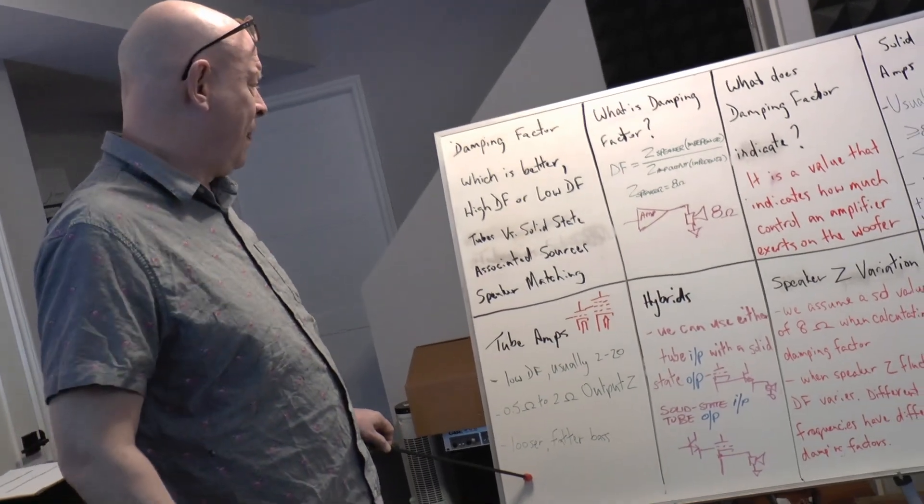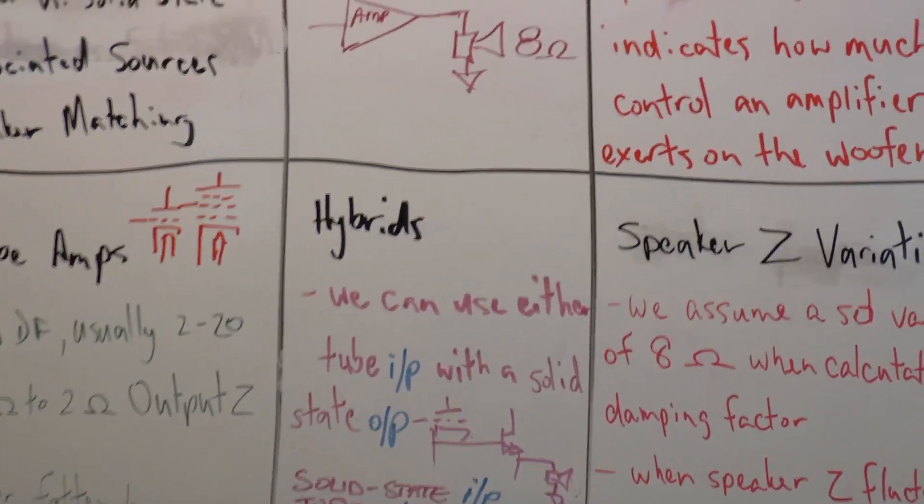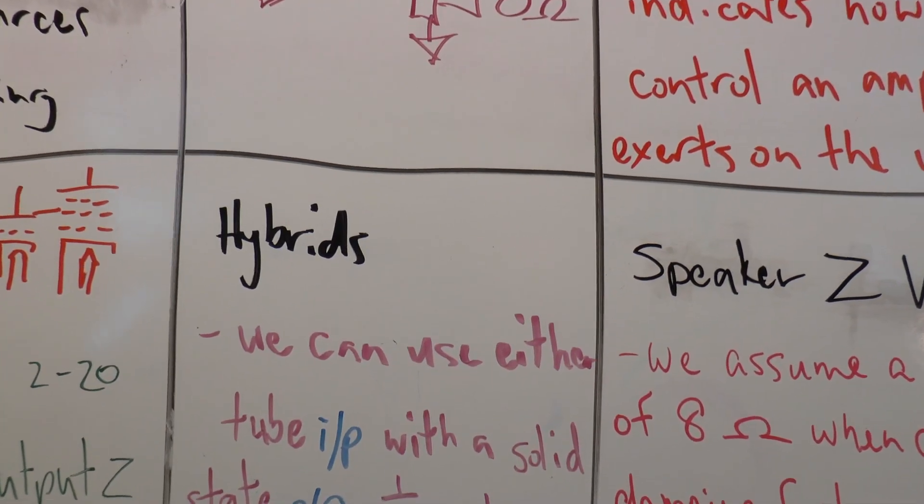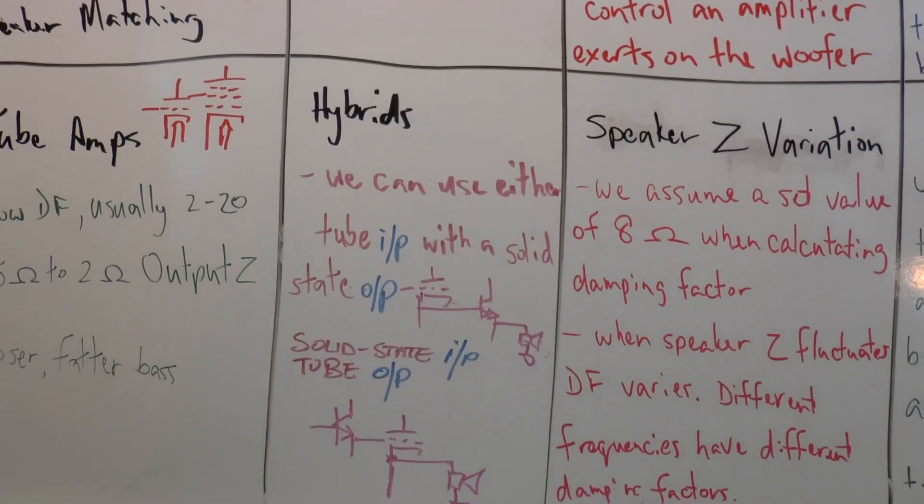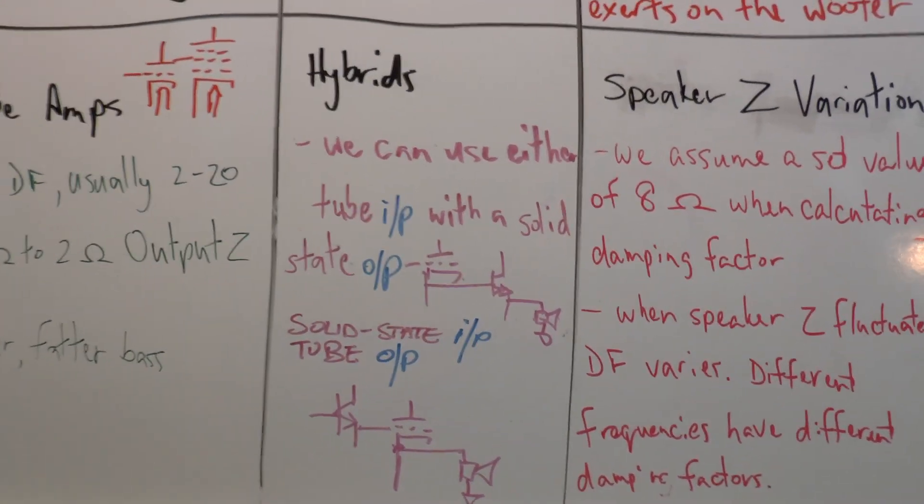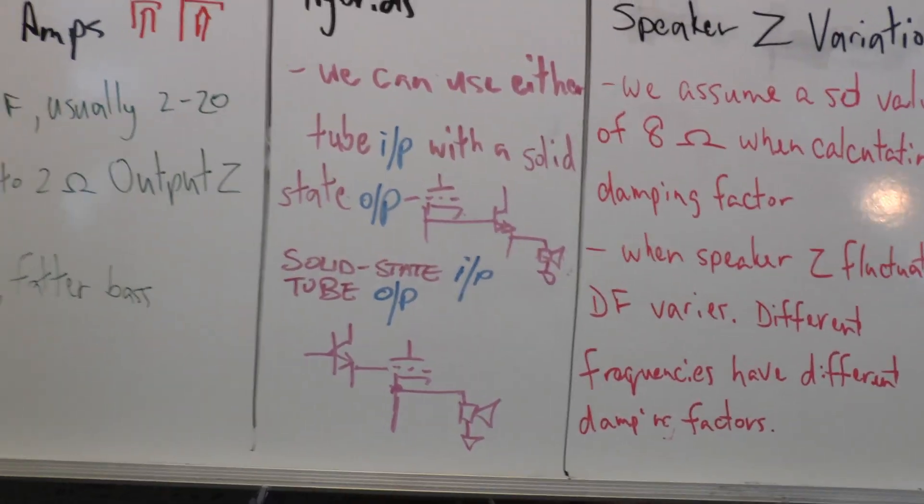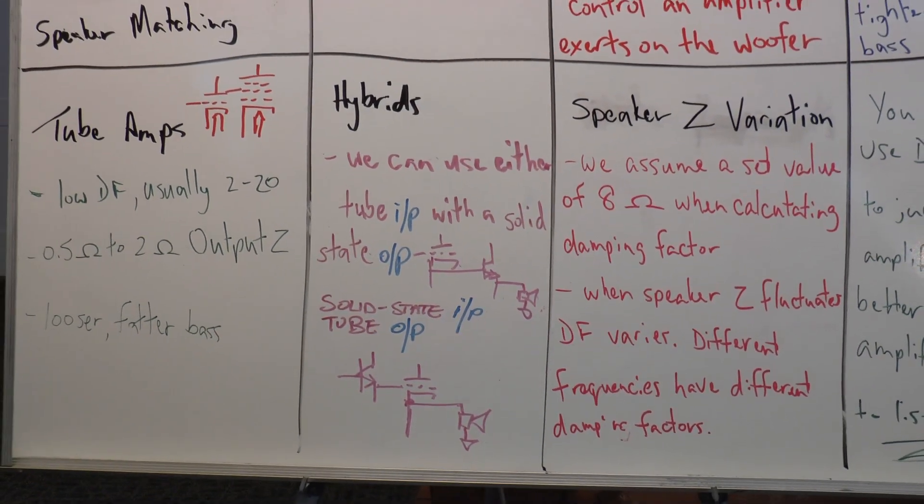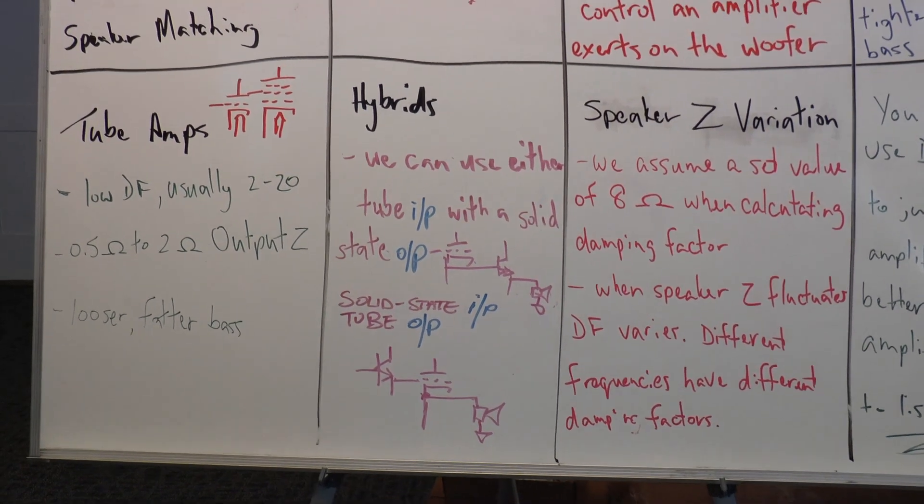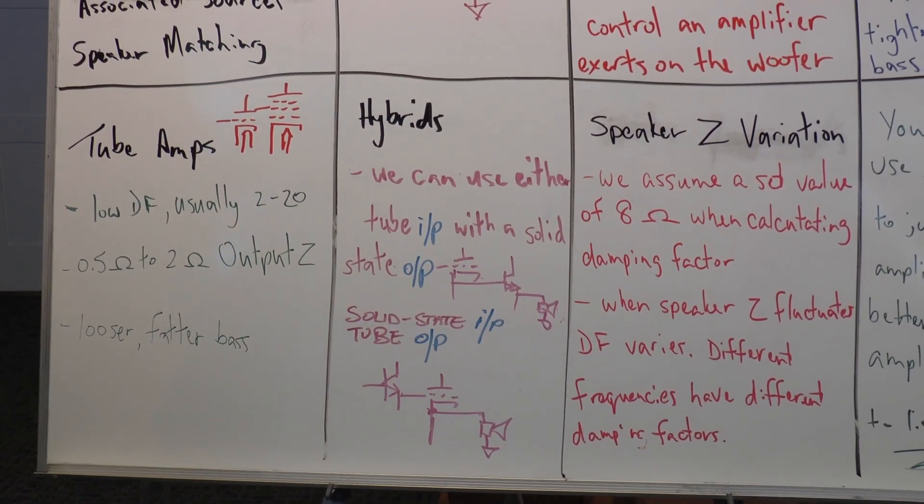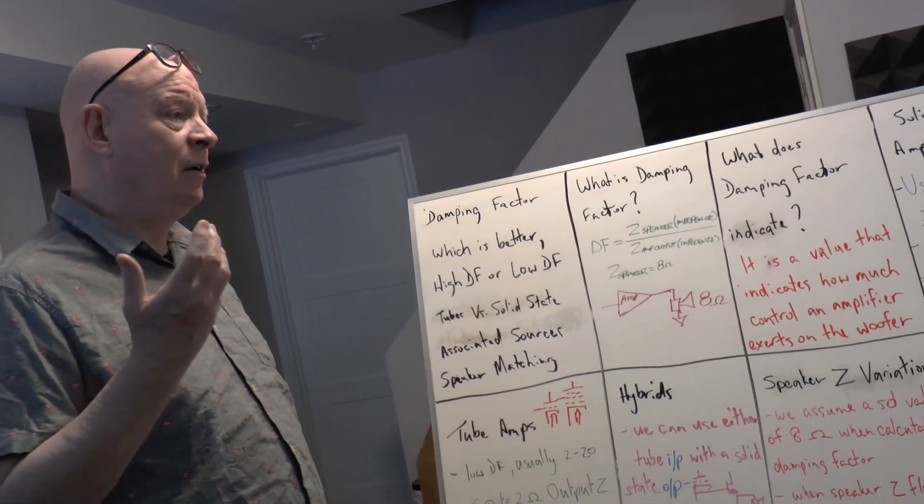We can alter the sound of amplifiers by using hybrids. There's all sorts of hybrids. We can use a tube input with a solid-state input stage in an amplifier. We can use a solid-state input with a tube output stage in an amplifier. We can use a tube preamplifier with a solid-state power amplifier and vice versa. Some really nice combinations come from what you would think would be not such a common thing, but a solid-state preamplifier with a tube amplifier—that can sound really, really, really good.